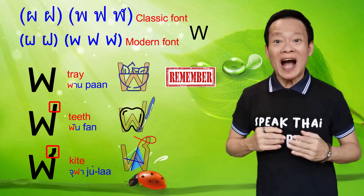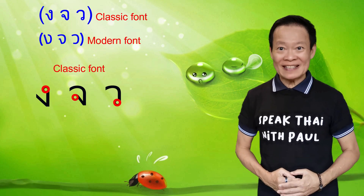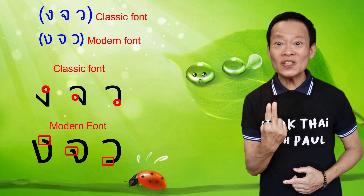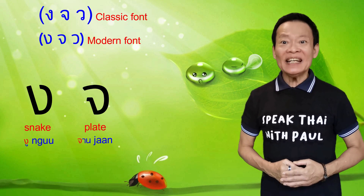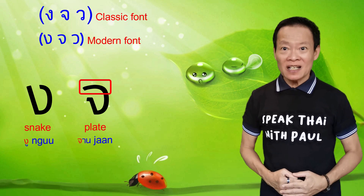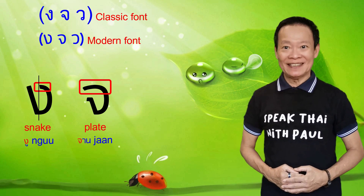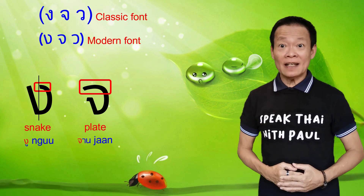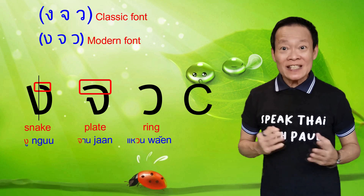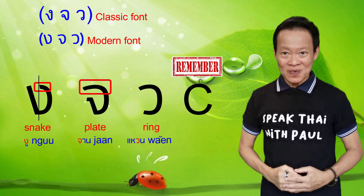The next group consists of another three similar looking consonants with a starting loop in classic fonts. However, in modern fonts, the loop is removed entirely. The first two consonants, Ngo Ngo and Zho Zan, are the hardest to distinguish. To help you identify the difference: for Zho Zan, the top curve covers the whole consonant, while for Ngo Ngo, it covers only half the consonant. On the other hand, the consonant Wor Waen is the easiest to identify as it looks like a flip-over C. So the next time you see a flip-over C shape, remember it is the consonant Wor Waen.